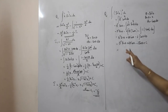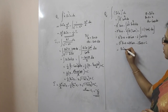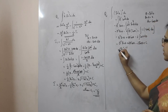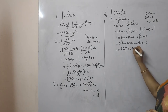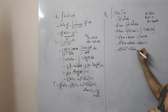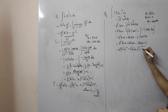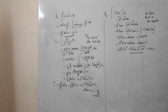Resubstituting back: θ = sin⁻¹(x), sin(θ) = x, cos(θ) = √(1−x²). The final answer is (sin⁻¹x)²·x + 2·sin⁻¹(x)·√(1−x²) − 2x plus c. This gives the final value after integrating (sin⁻¹x)² dx.